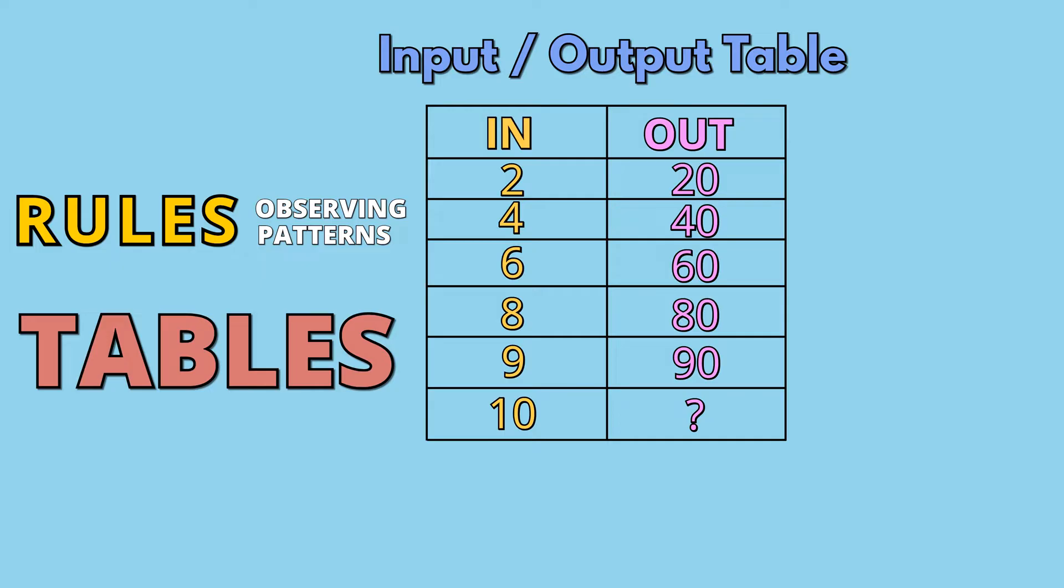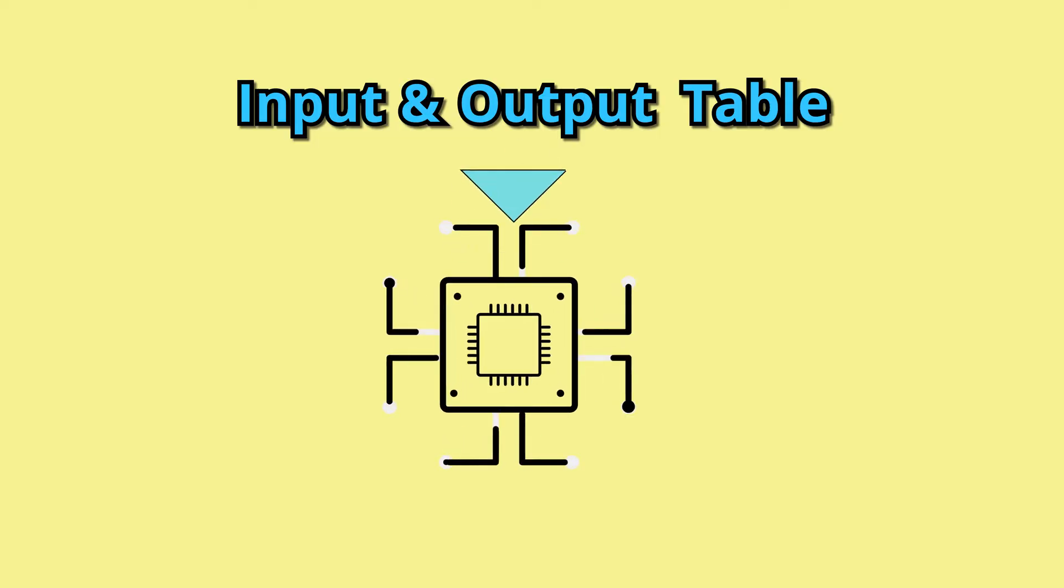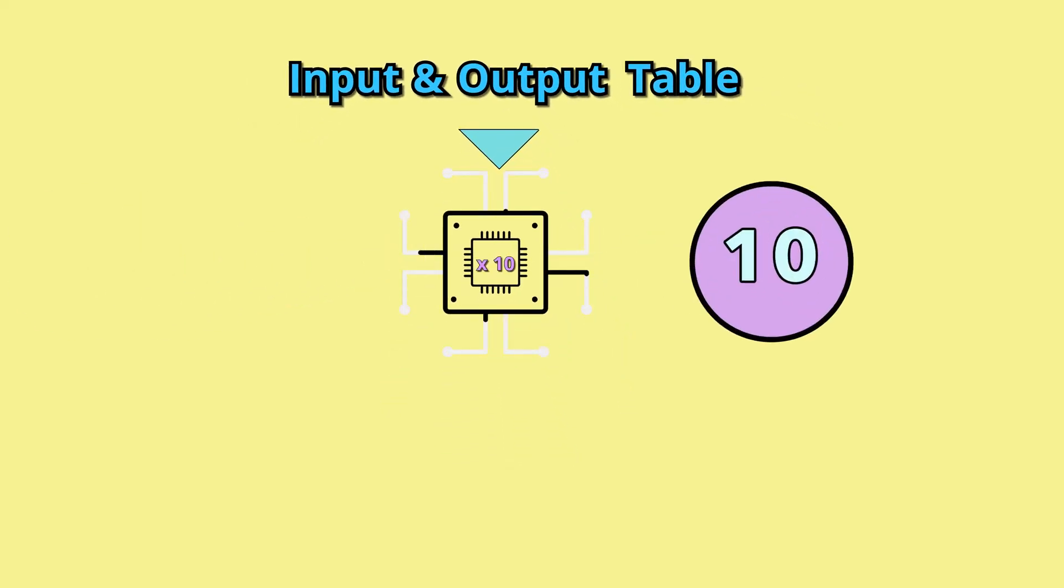So what are input and output tables? You can think of an input and output table as a machine where one number is put in and a different number comes out. That is your output.